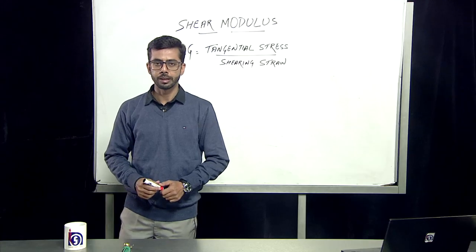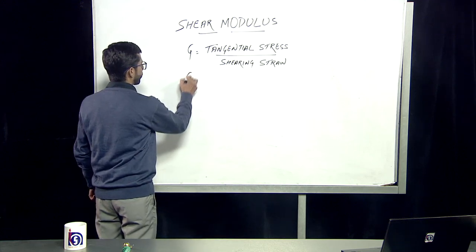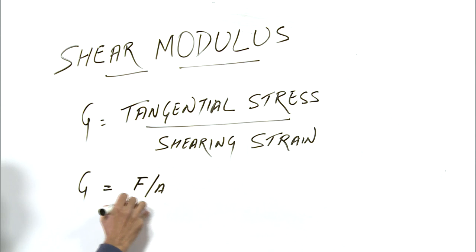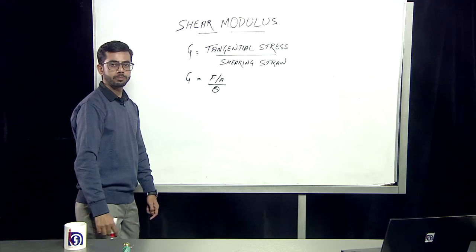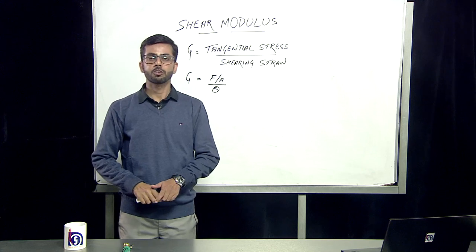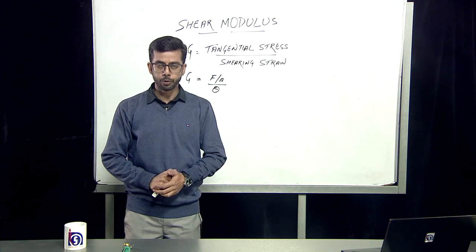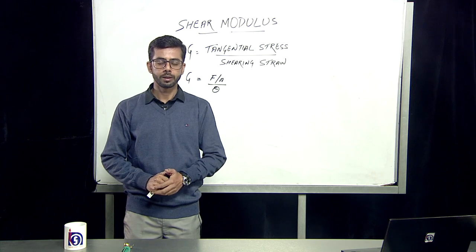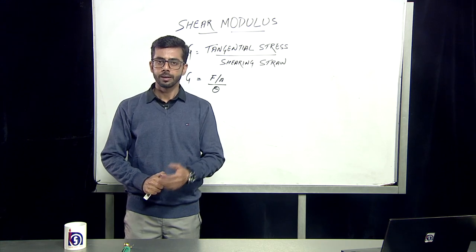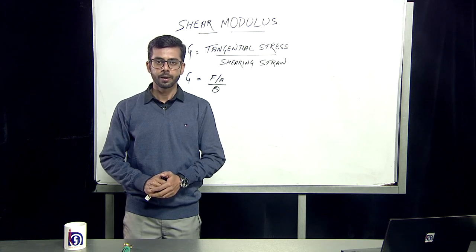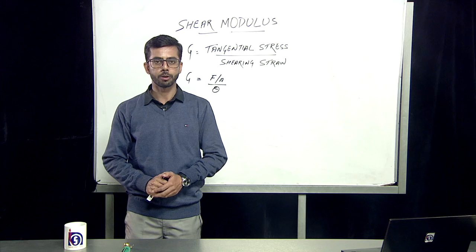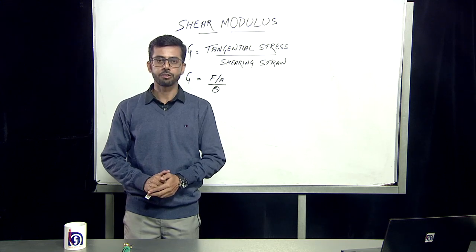The final formulation is given by G, which is tangential stress — force upon area — divided by the shearing strain. All three types have been explained. To review: Hooke's law applies to three types — Young's modulus, where the emphasis is on length; bulk modulus, where the emphasis is on volume; and shear modulus, where the applied stress is tangential to the surface.